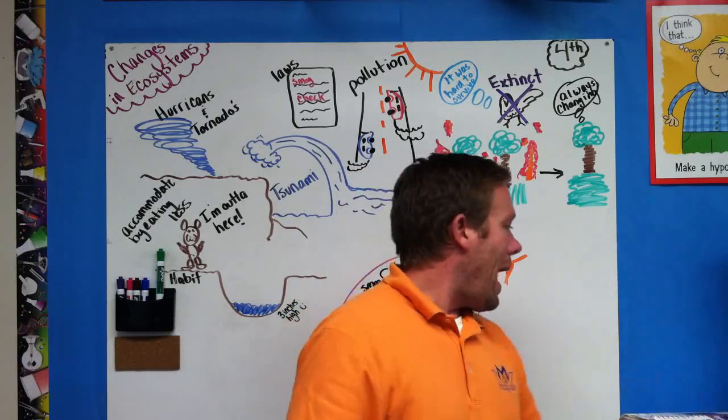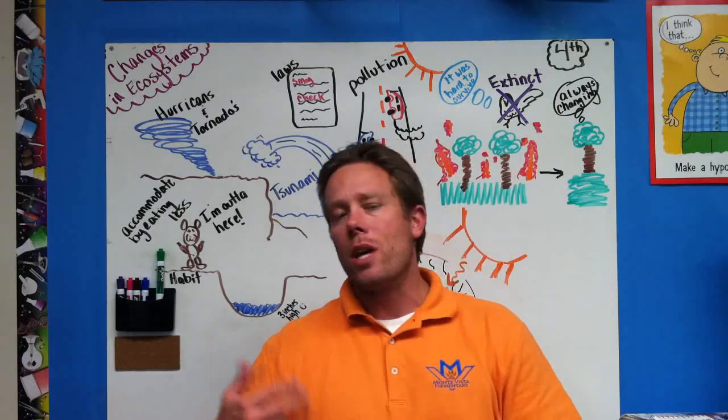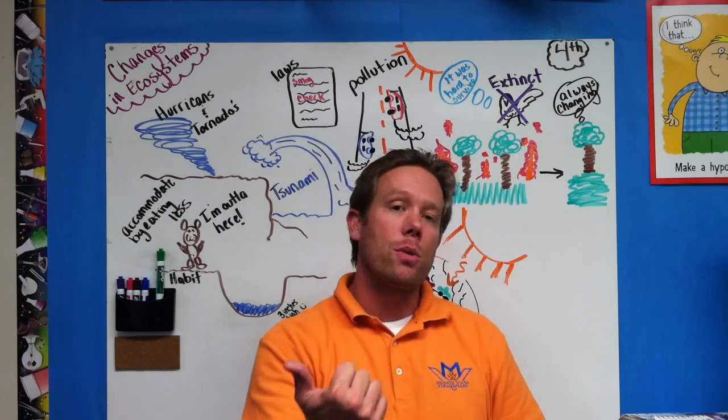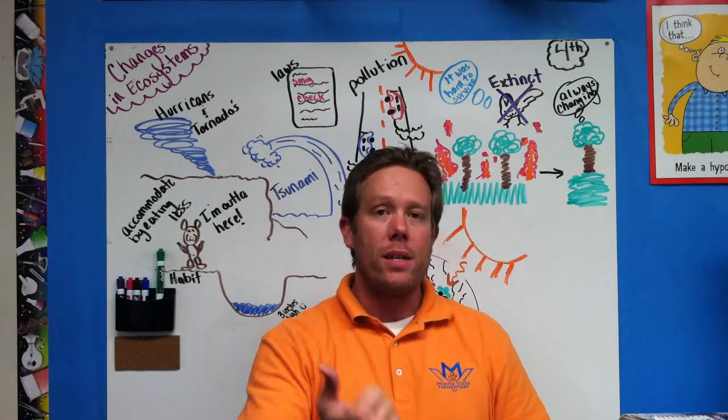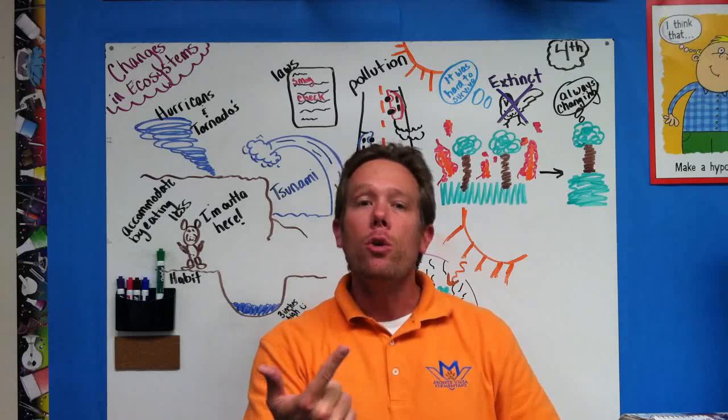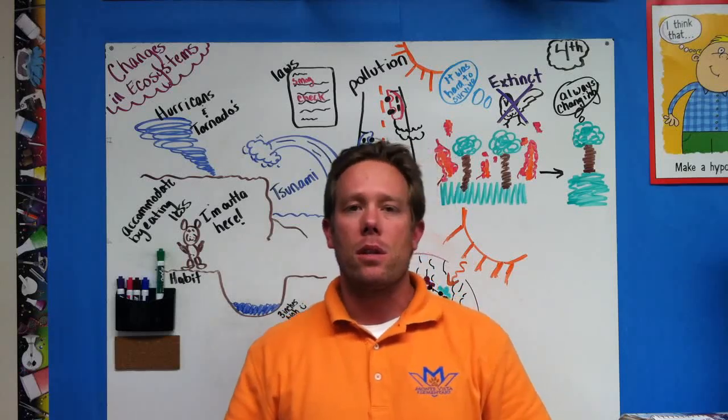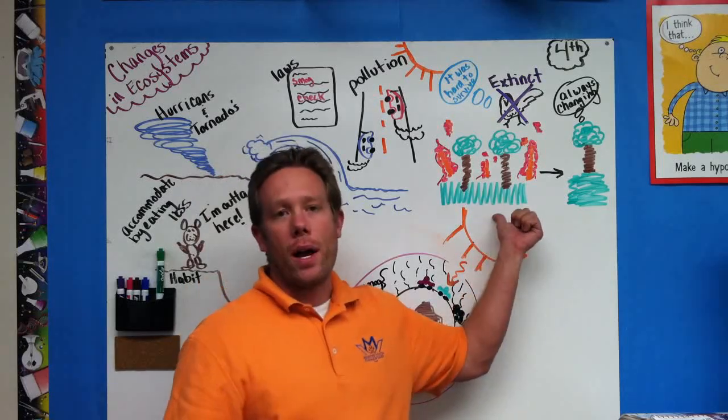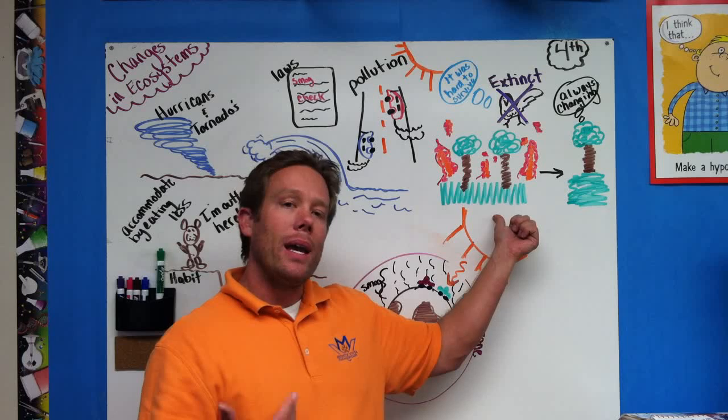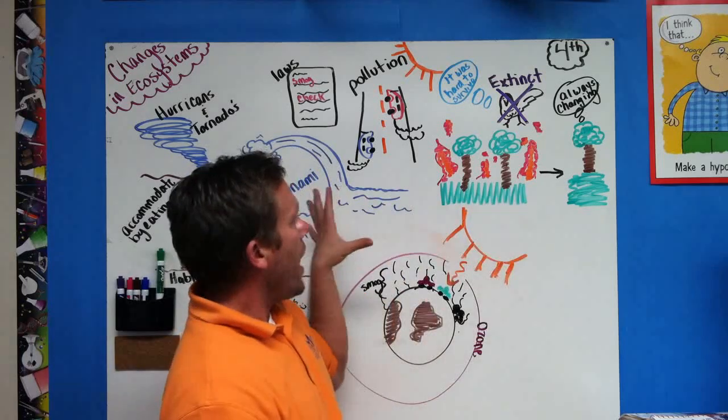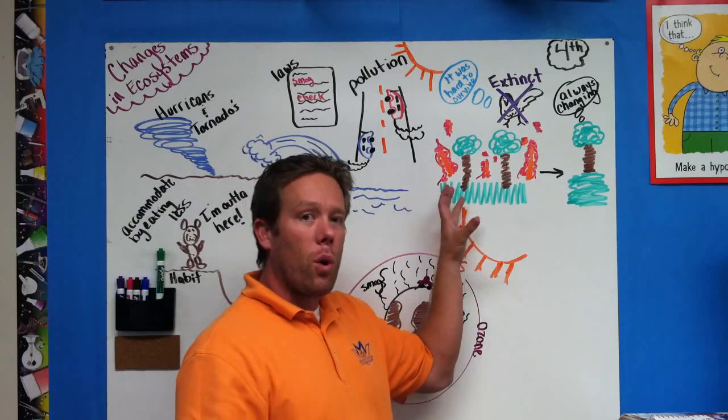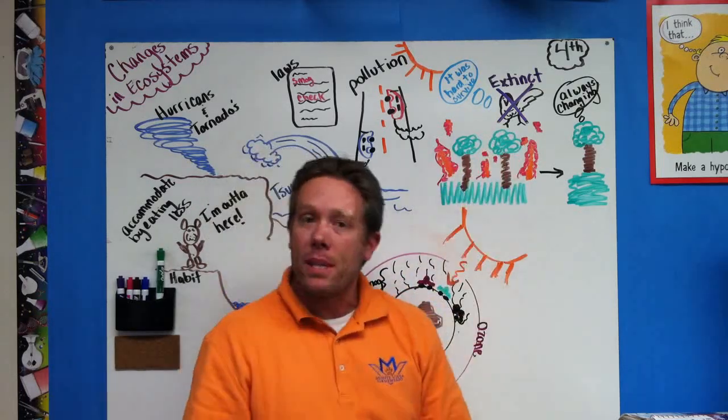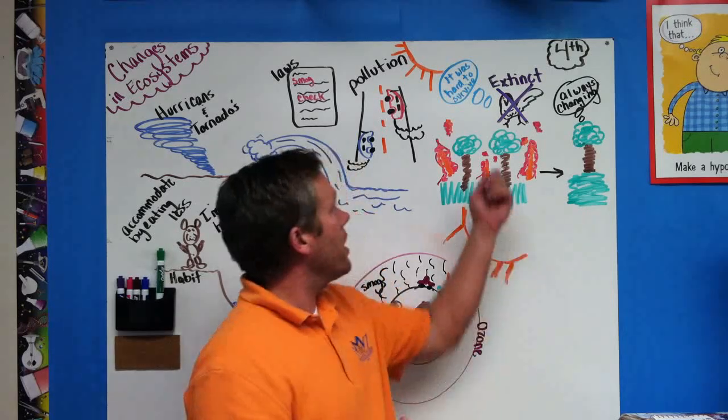So how can ecosystems change? Ecosystems can change in a couple different ways. They can either happen by natural disasters or in natural ways, or they can happen by humans doing something to this ecosystem. For example, let's look at it here. A forest fire would be one way in which an ecosystem can change. A fire can spread through this forest and can actually ruin some of the habitats and the homes of animals living there.